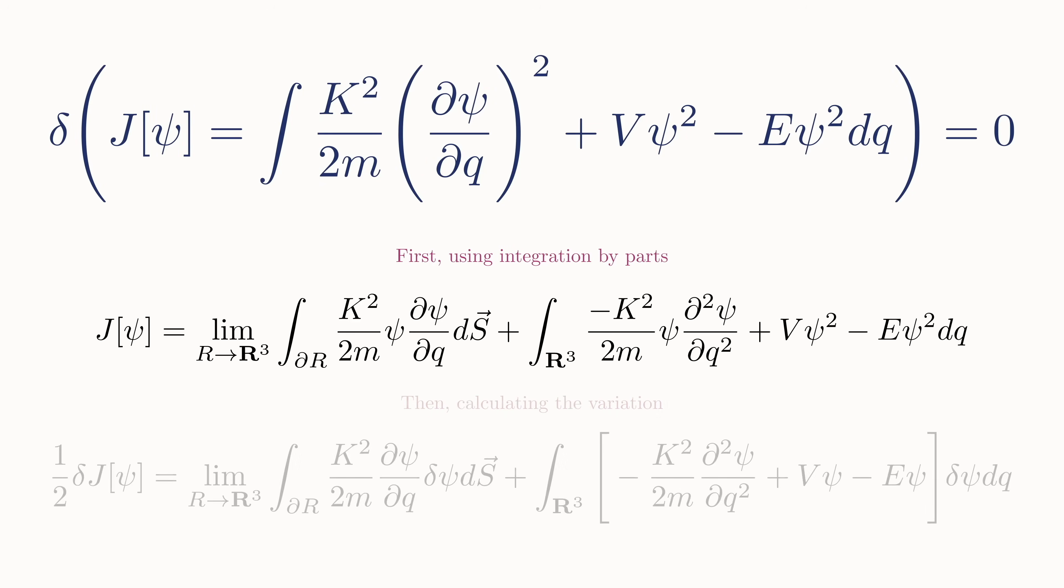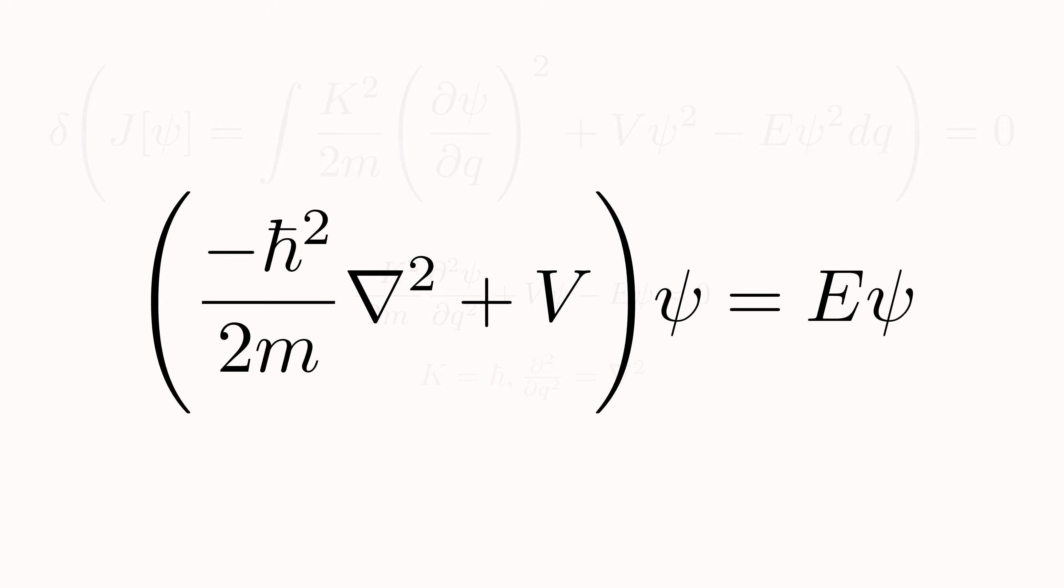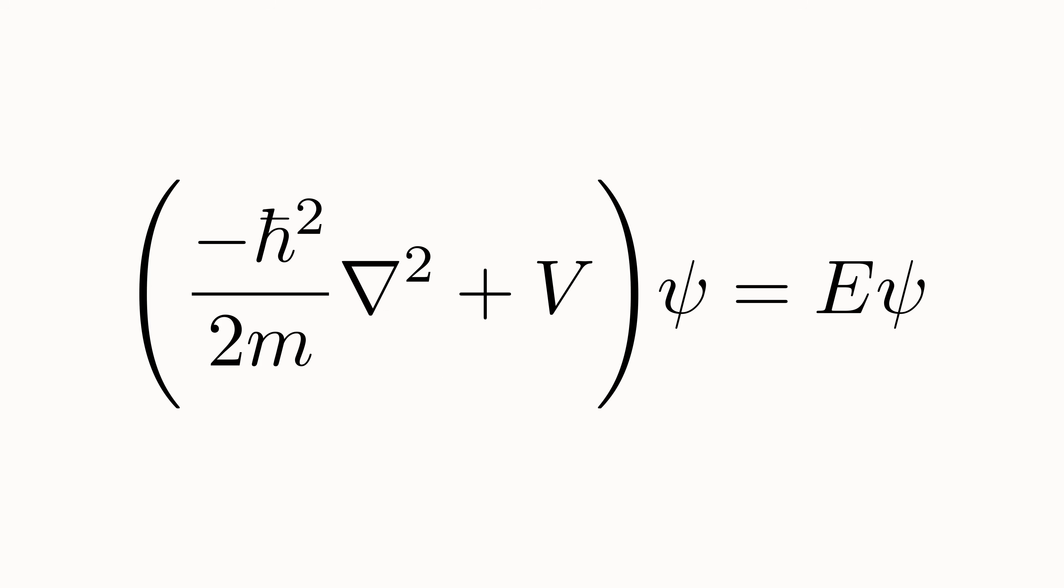Carrying through the calculations, the first term here is just a boundary condition that Schrödinger deals with later in the paper. It equals zero. So we are only left with this term. And since the variation of psi can be anything, in order for the whole integral to be zero, the rest of the expression in here must be zero. Then letting k equal h-bar, the reduced Planck constant, and moving E to the other side, we arrive at the time-independent Schrödinger equation, the fundamental equation of quantum mechanics. It is the equation that describes stationary quantum states. In other words, states that don't change over time.